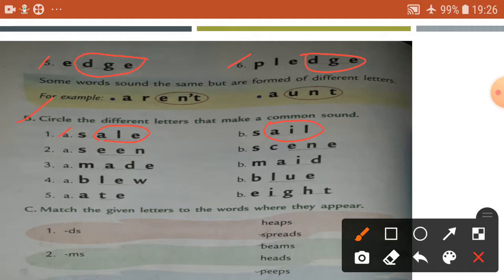Number two, seen S-E-E-N, so circle E-E-N. Scene, E-N-E, okay. Number three, made M-A-D-E, A-I-D, okay. Blue, so L-E-W, L-U-E, okay.